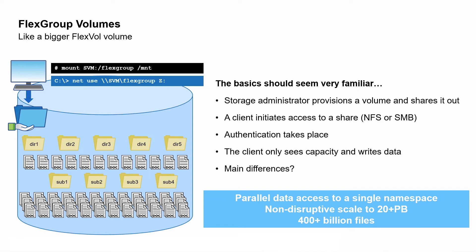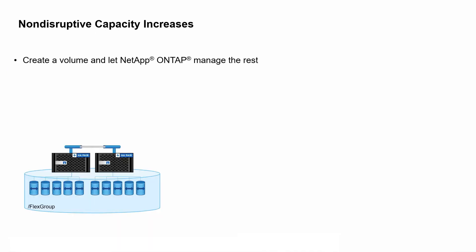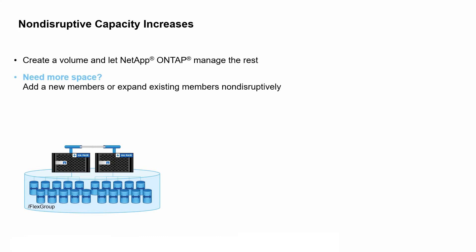One of the challenges of large storage systems has been that once you fill up the volume, you don't have anywhere else to go, and you have to scramble to free up capacity before you hit an outage. With FlexGroup volumes, scramble no more. As you approach capacity limits, you can simply increase the volume size or add new FlexVol member volumes to the FlexGroup non-disruptively.